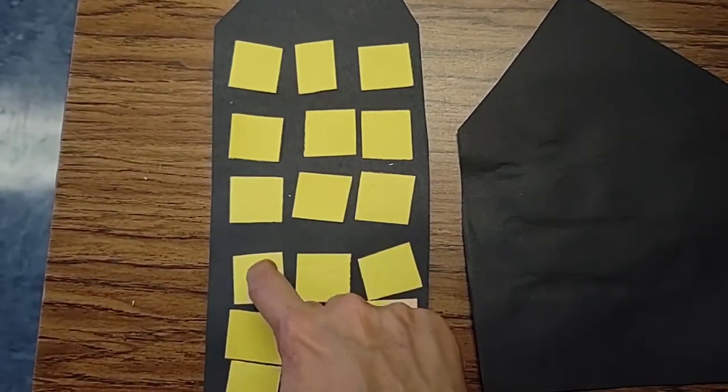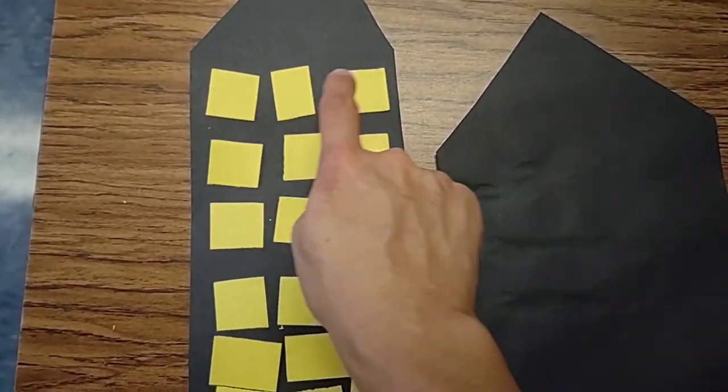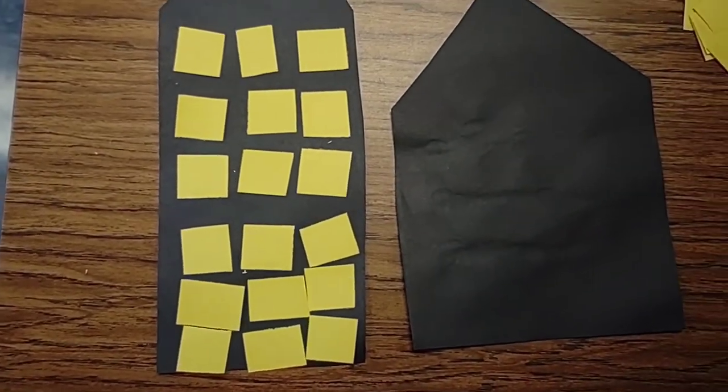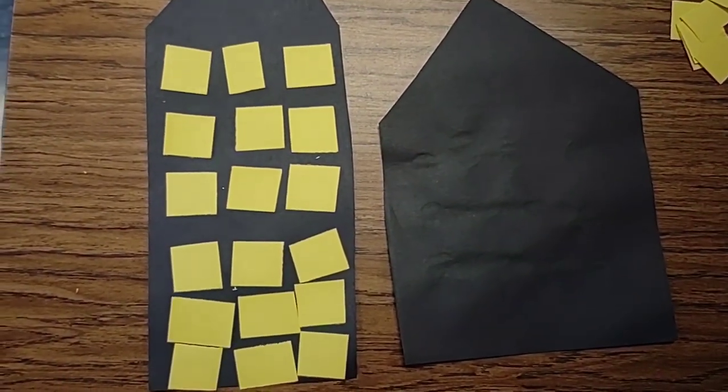So here's our array of six times three. So we have six rows. One, two, three, four, five, six, with three in each. So six times three gives us 18.